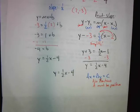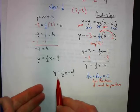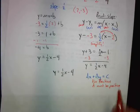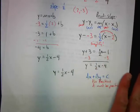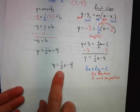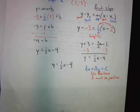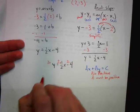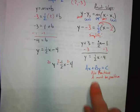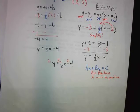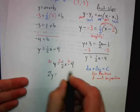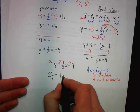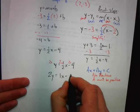We have to make this equation look like Ax plus By equals C. We can't have any fractions and A must be positive. The first thing we do is get rid of the fraction — we multiply everything by the denominator. So we multiply everything by 2: we get 2y equals x minus 8.